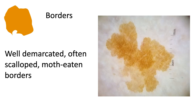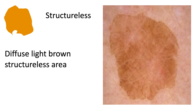The borders of solar lentigos are usually well demarcated, often scalloped or moth-eaten. We can also see a structureless pattern, which is made of diffuse light brown structureless areas. As seen in this photo, we also have the well-demarcated or sharply demarcated borders.